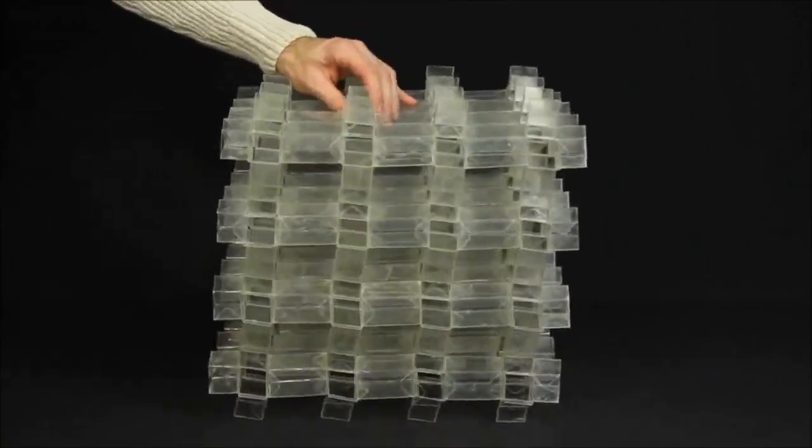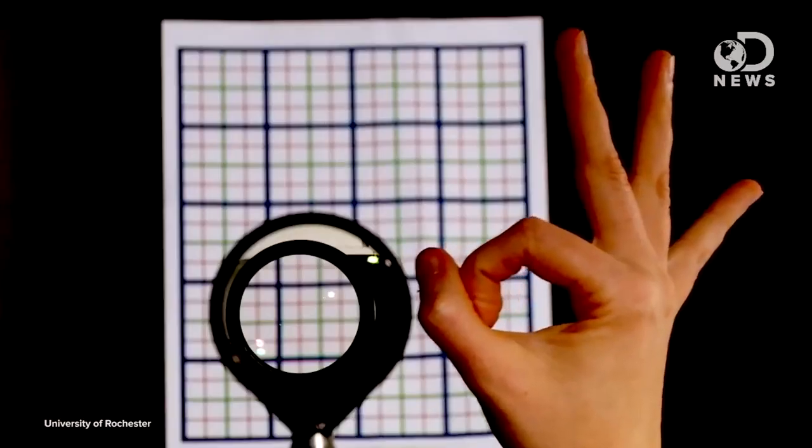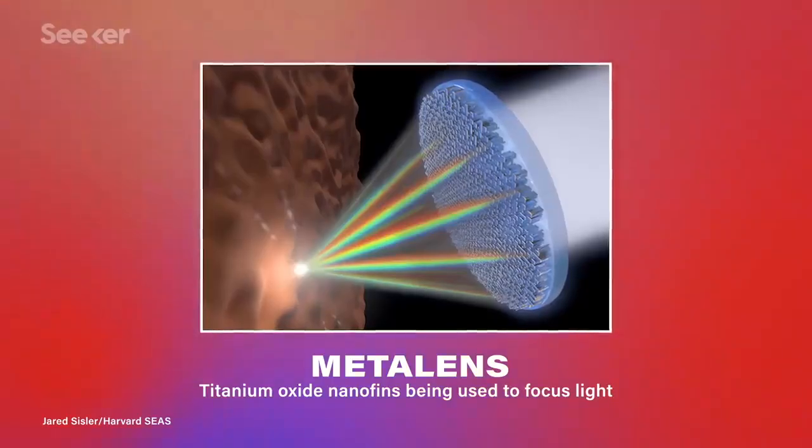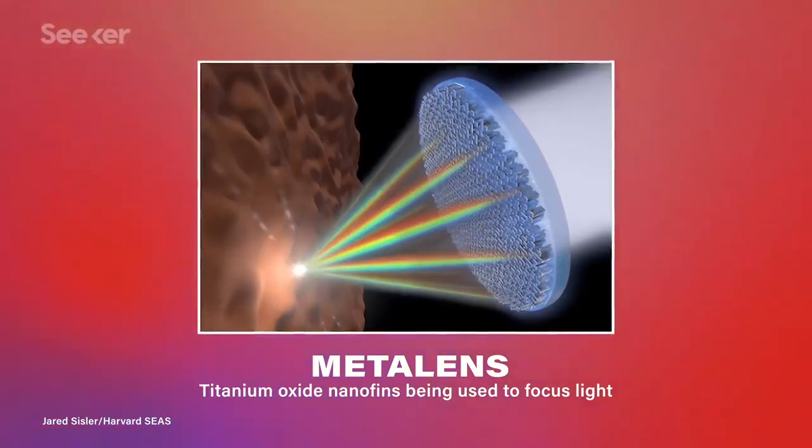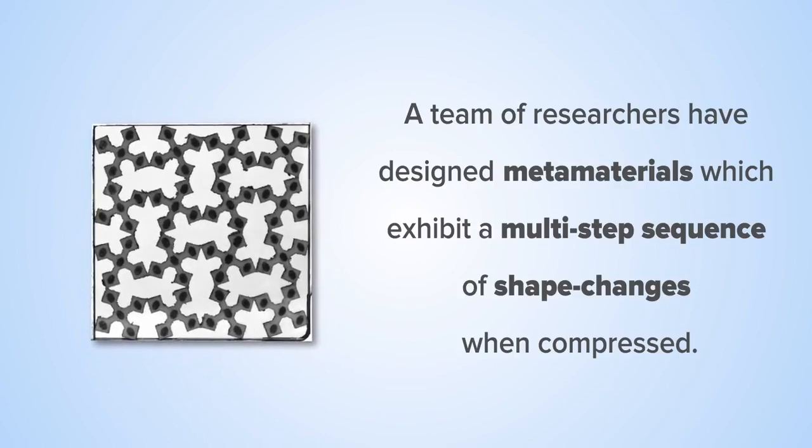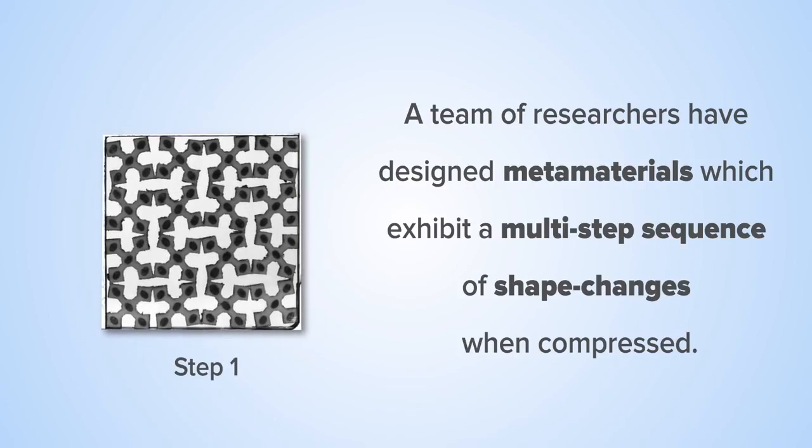For example, famous metamaterials are those with negative refractive index that can provide an alternative to glass when making lenses. Some metamaterials are designed to perform self-guided shape changes, whereas for other metamaterials the time dependence of their softening or hardening can be tuned.